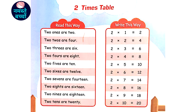2 6's are 12, 2 7's are 14, 2 8's are 16.